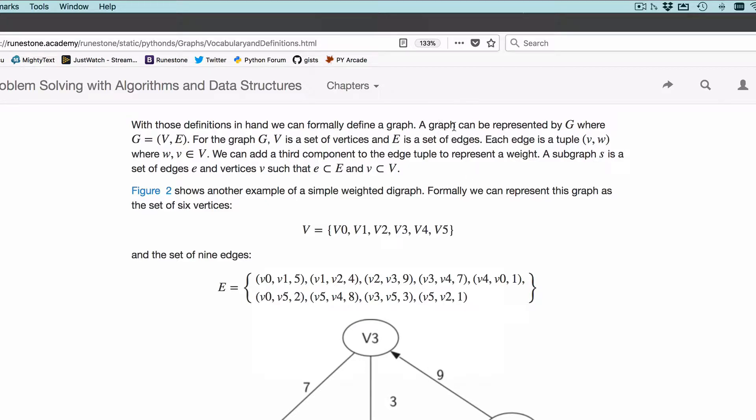We're going to represent a graph as the letter G. A graph is basically a tuple of V and E, where V is the vertices and E is the edges.